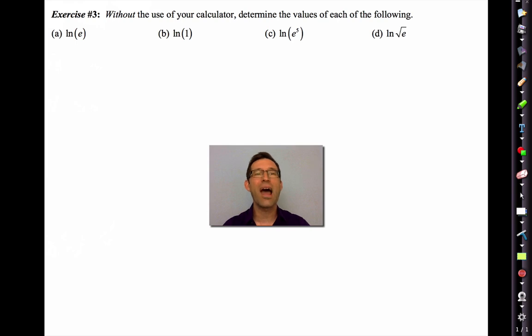Without the use of your calculator, because the natural logarithm is on your calculator. We just saw it. It was that little ln button. Without the use of our calculator, determine the values of each of the following. Well, what's the ln of e? Well, remember, the ln is the same as the log base e. So what would we have to raise e to to get e? Well, we'd have to raise it to the first power. So the ln of e is 1.